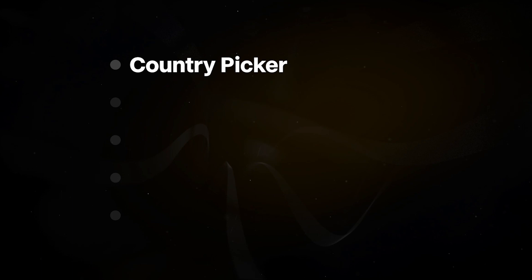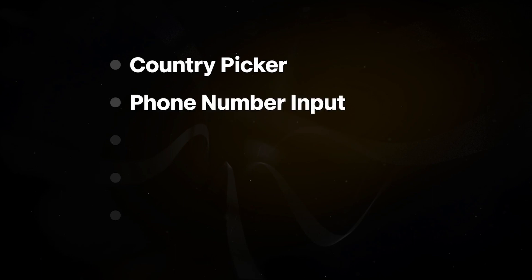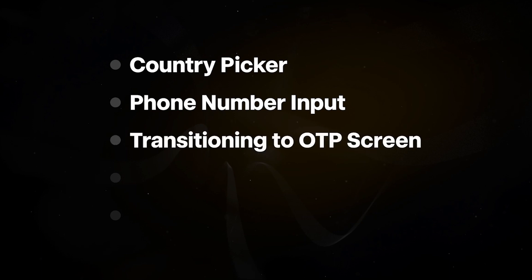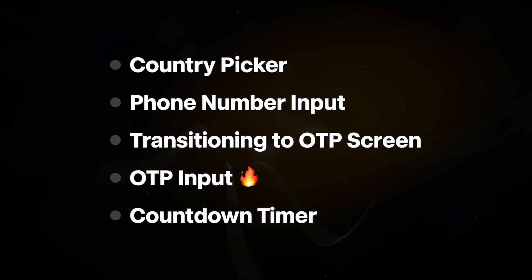The course is divided into five parts: Part 1 is the country picker; Part 2 is the phone number input; Part 3 is transitioning to the OTP screen — which is a full hour video covering back navigation, state resets, and carrying forward information; Part 4 is the OTP input itself, which looks simple but is insanely hard; and Part 5 is the countdown timer, probably the most interesting one that a lot of people will want to see.